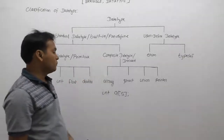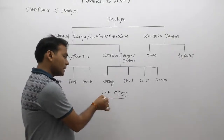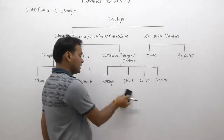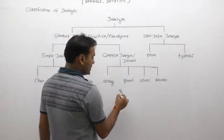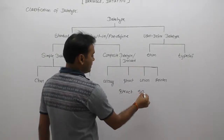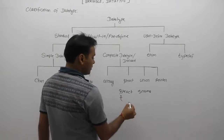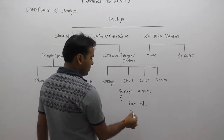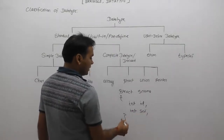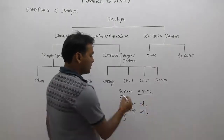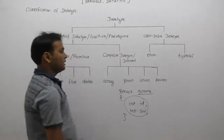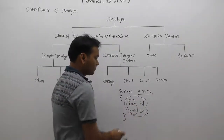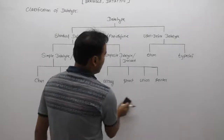In an array like 'a[5]', it is a composite data type because in that case the data type contains multiple elements — there are five elements. We will discuss this more during array sessions. Similarly, the basic syntax of a structure is: 'struct StructureName { int id; float salary; }'. Here we are creating a new data type called struct S, which is a collection of id and salary. It is considered a composite or derived data type because it is created based on existing types.